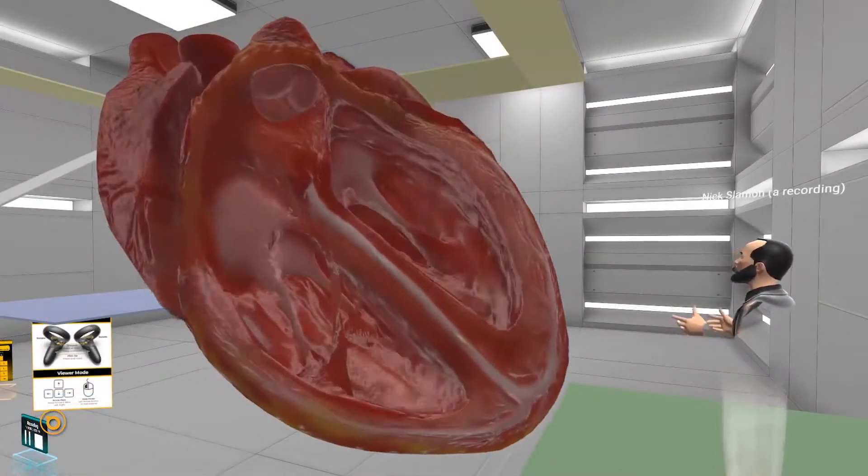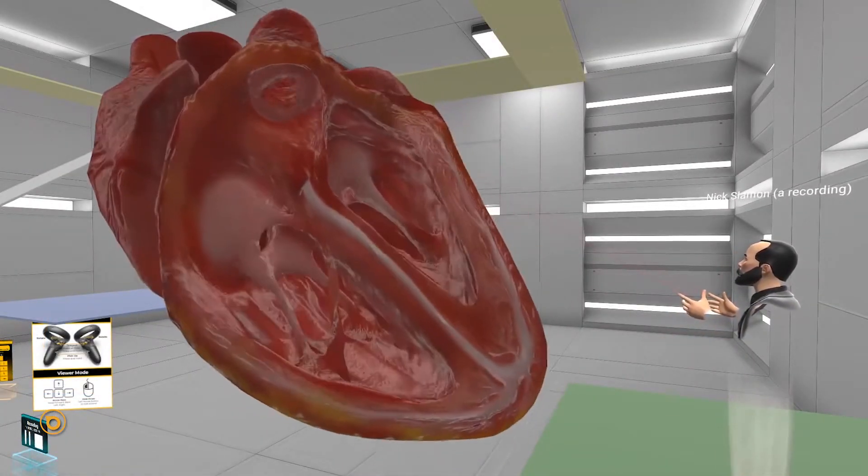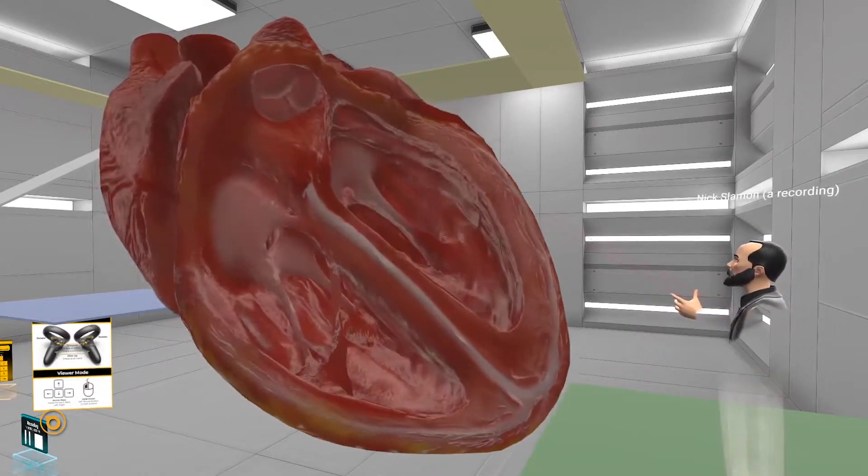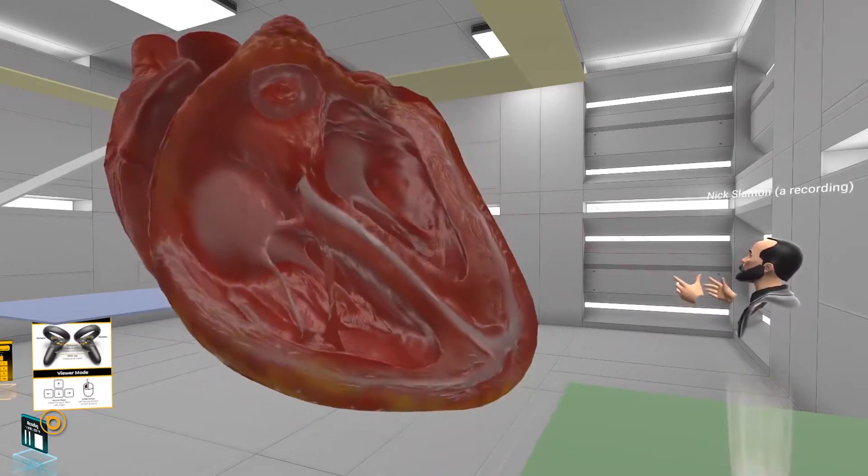So in this heart, we have the open sectioning so that you can see the inside. But you can imagine from this lower chamber, this right ventricle, a pipe coming up.